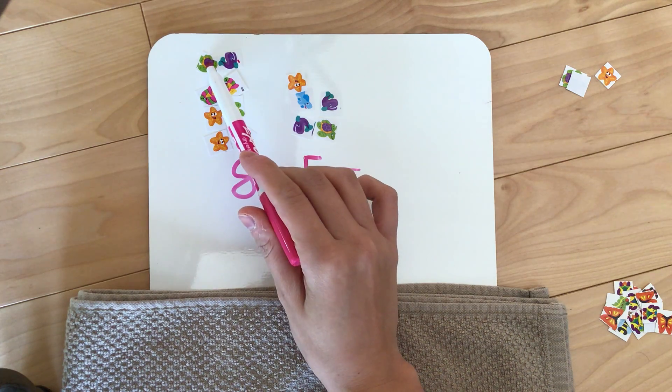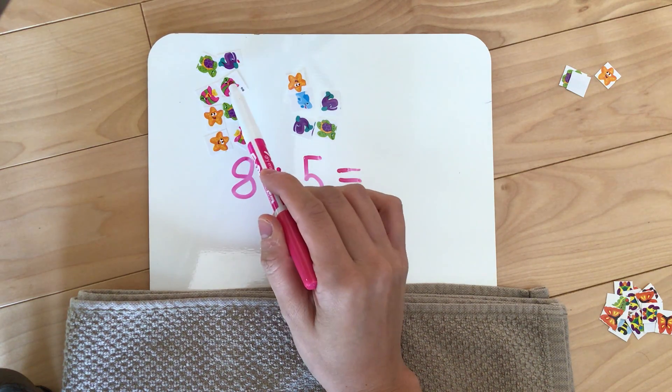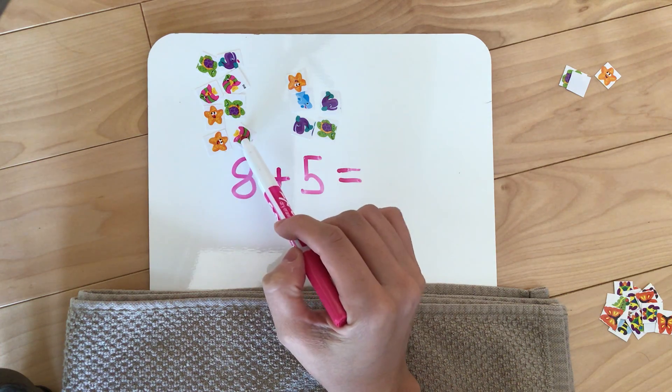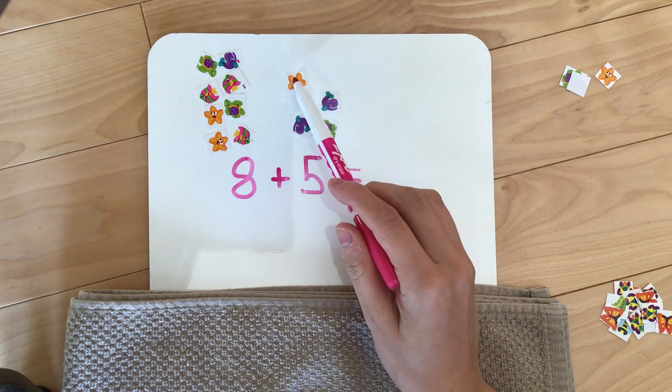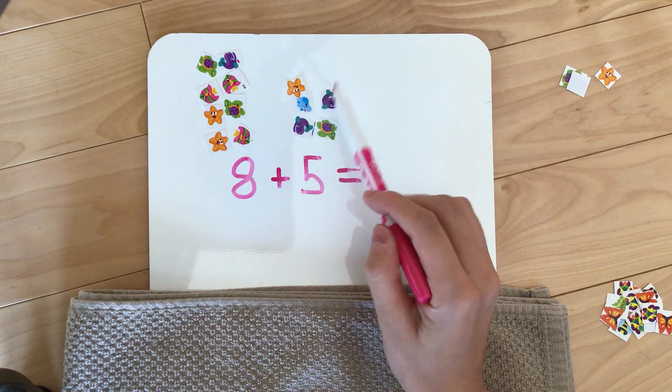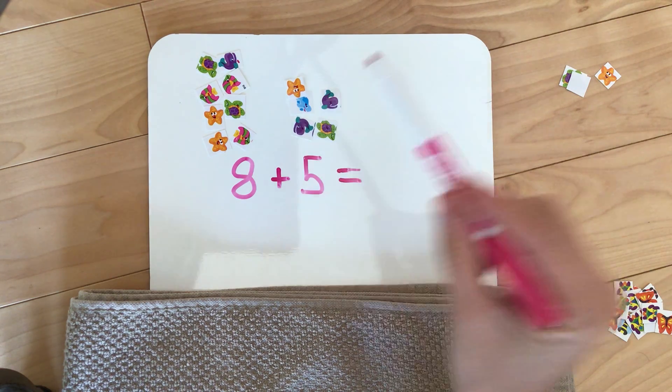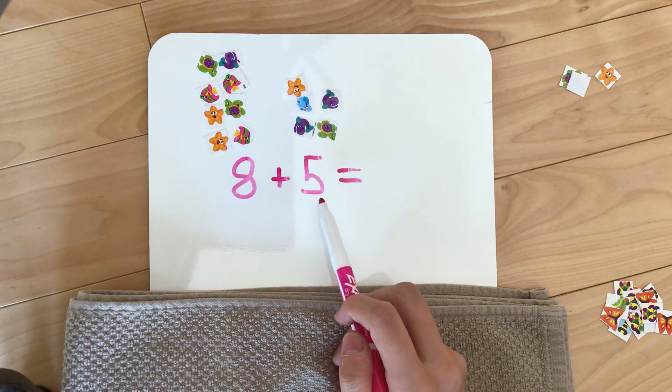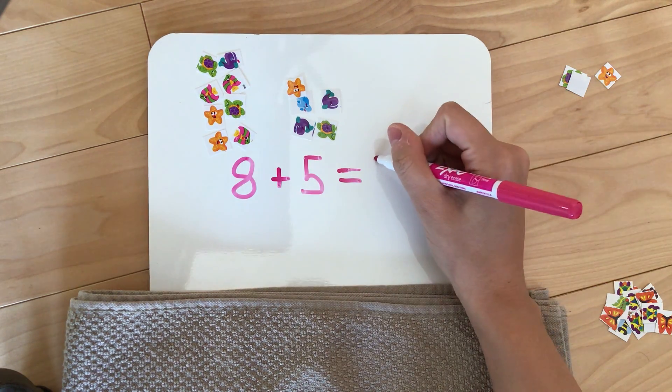So we have 1, 2, 3, 4, 5, 6, 7, 8, next pile, 9, 10, 11, 12, 13. We have 13 stickers all together so we know that 8 plus 5 equals 13.